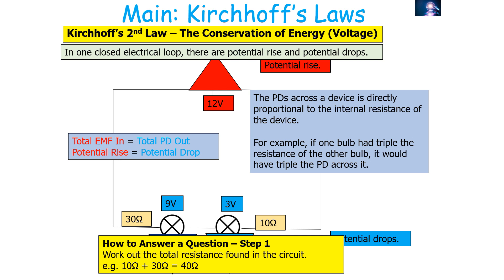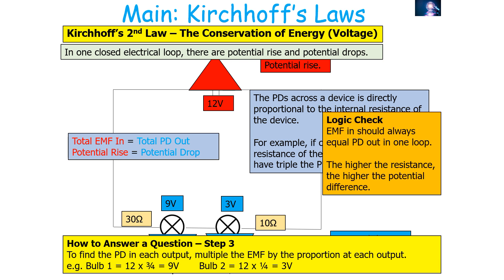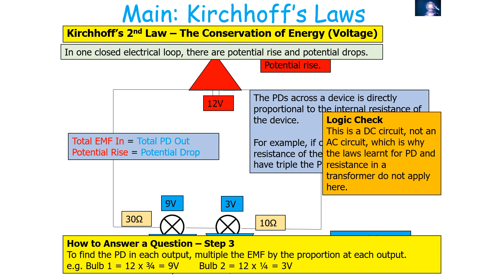For example: 10 + 30 = 40 ohms total. Bulb 1 takes three quarters and bulb 2 takes one quarter. Multiply the EMF by the proportion: bulb 1 gets 12 × ¾ = 9 volts, bulb 2 gets 12 × ¼ = 3 volts. Check your answer: total EMF in equals total PD out, and the higher the resistance, the higher the potential difference. Note that these rules apply to DC circuits — the laws for PD and resistance in a transformer, which is a high-frequency AC circuit, do not apply here.